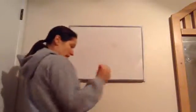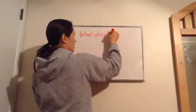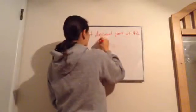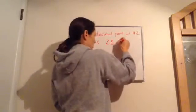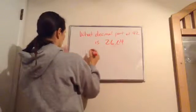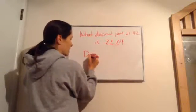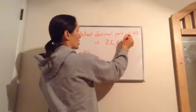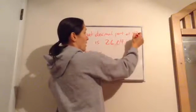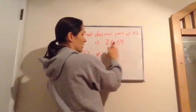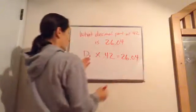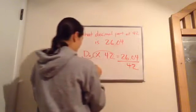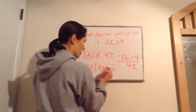This one says: what decimal part of 42 is 26.04? Let d represent the decimal part. 'Of' means times, so d times 42 = 26.04. To isolate d, divide both sides by 42. Bring the decimal up — our decimal answer is 0.62.